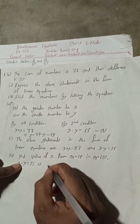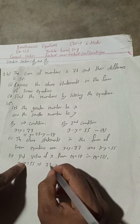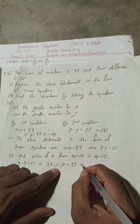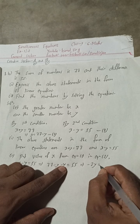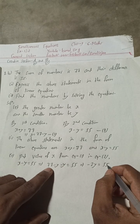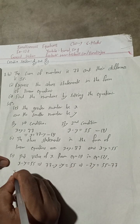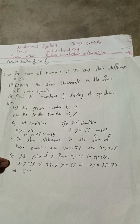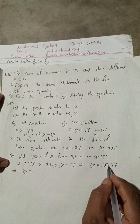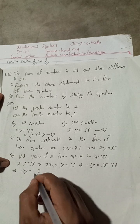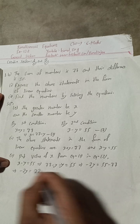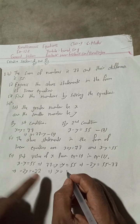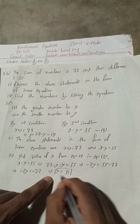This implies 77 minus y minus y equals 55, so minus 2y equals 55 minus 77, which gives minus 2y equals minus 22. The negatives cancel and we get 2y equals 22, so y equals 11.